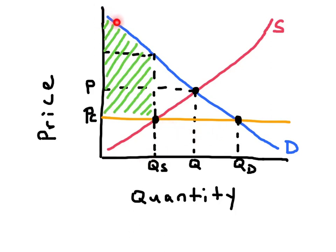This is the consumer surplus that results from the price ceiling. The original consumer surplus was the area above the price underneath the demand curve. Here we have the producer surplus. The producer surplus as a result of this ceiling is much smaller than the producer surplus before the price ceiling.